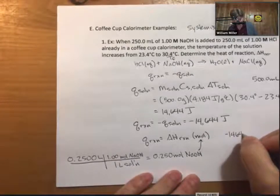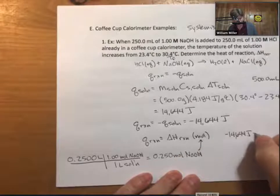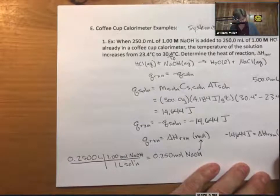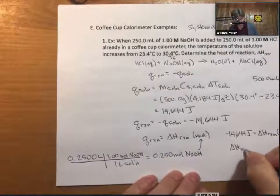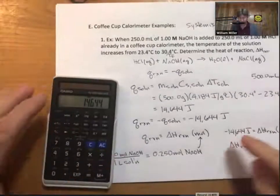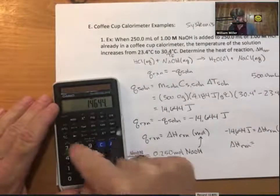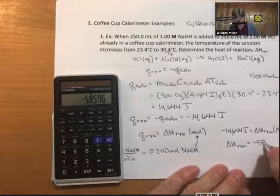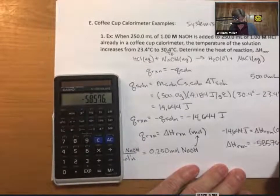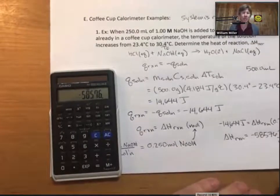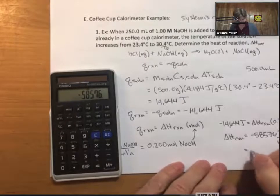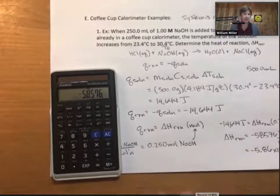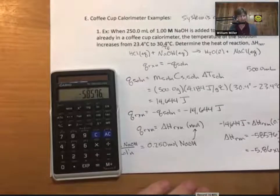Those will be our moles reacted, whether sodium hydroxide or HCl for this problem. We'll do later problems where there is a limiting reactant. So minus 14,644 joules is our Q, we don't know our delta H reaction, but we do know our moles. Delta H reaction is 14,644 with a minus sign divided by 0.250, which gives minus 58,576 joules per mole. Rounding to three sig figs, that's 5.86 times 10 to the fourth joules per mole. That is our final answer.